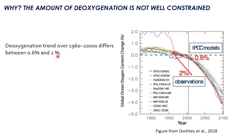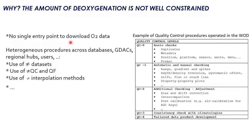We have this uncertainty because so far there is no single entry point where you can download oxygen data. You need to go to different databases and different data assembly centers. On top of that, the procedures used for quality control, quality flagging, and interpolation differ according to the database and the user. Here we have represented the different quality control levels performed in the World Ocean Database, from basic checks to more elaborate secondary quality control and adjustment. This quality control and adjustment differs across databases and is sometimes not well documented, so users do not know exactly what has been changed compared to the raw data.